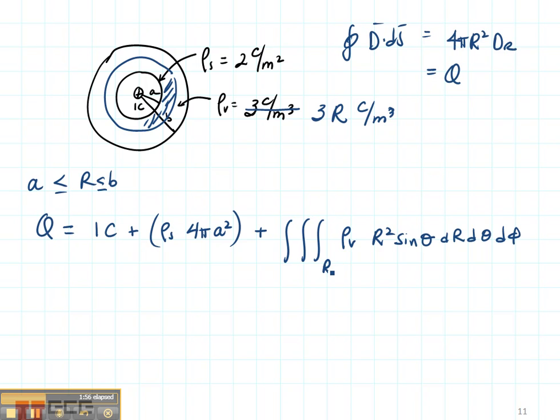R in this case, just the part I'm picking up, is going to vary from A to R. Here's R right there. From A to R, theta is going to vary from 0 to π, and phi is going to vary from 0 to 2π.